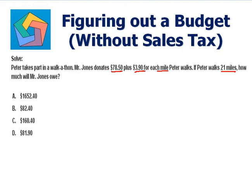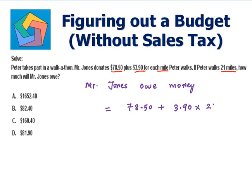Let's calculate how much Mr. Jones owes. Money owed equals the base amount, $78.50, plus $3.90 for each mile. The miles Peter walks is 21, so $3.90 times 21. That's $78.50 plus $81.90, which equals $160.40 — 160 dollars and 40 cents. That's the answer.